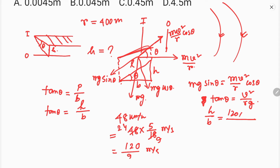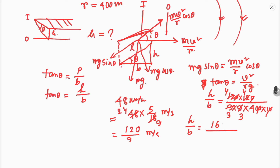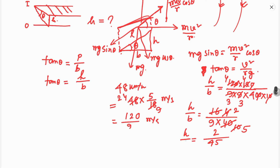v squared is 120 over 9, so v squared equals 120 times 120 divided by 9 times 9. Divided by r equals 400 and g equals 10. Simplifying, h by b equals 2 by 45.